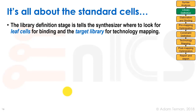If we have instantiations of cell types that we don't have an RTL description for — no module statement describing that cell, such as an instantiation of a specific standard cell from the library or an IP like an SRAM block — that is a leaf cell. We have to look for those leaf cells and bind our netlist to them. Then we have what we call the target library, which is our standard cell library — what we want to map our RTL or boolean constructs to.